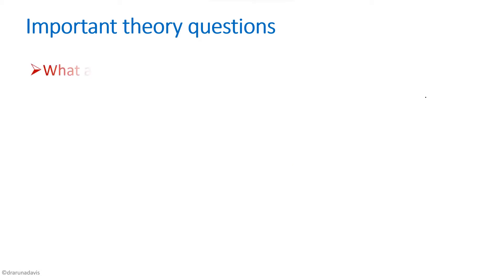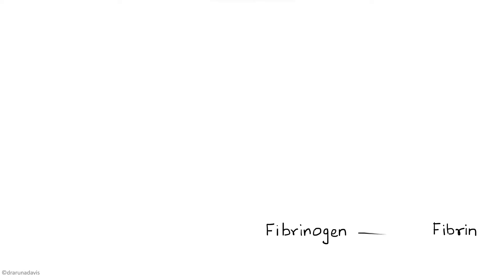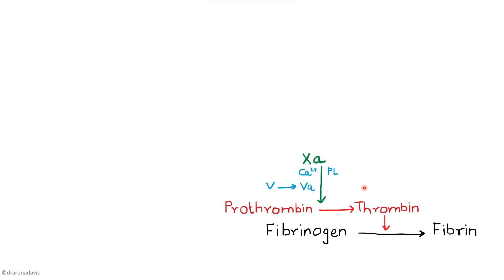Another important question is: what are the mechanisms of hemostasis? A clot is formed from fibrin, which is in turn formed from fibrinogen. Thrombin converts fibrinogen to fibrin, and thrombin is itself formed from prothrombin. Prothrombin is converted to thrombin by a prothrombin activator, which consists of a complex of activated factor 10, calcium, activated factor 5, and platelet phospholipids.